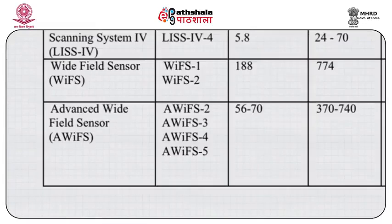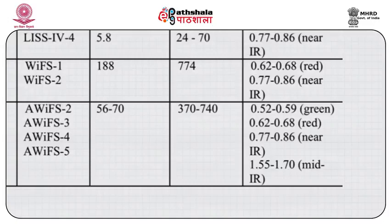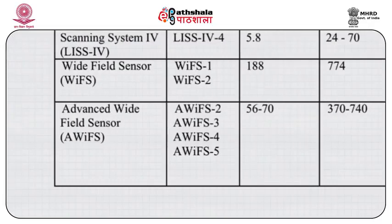Come to the WiFS, that is the Wide Field Sensor. WiFS 1 and WiFS 2 are on board. The spatial resolution is 188 meters. It has a spectral resolution of 0.62–0.68 and 0.77–0.86 near infrared. Come to the Advanced Wide Field Sensor, also known as AWiFS. It has AWiFS 2, 3, 4, and 5. The spatial resolution ranges from 56 to 70 meters.